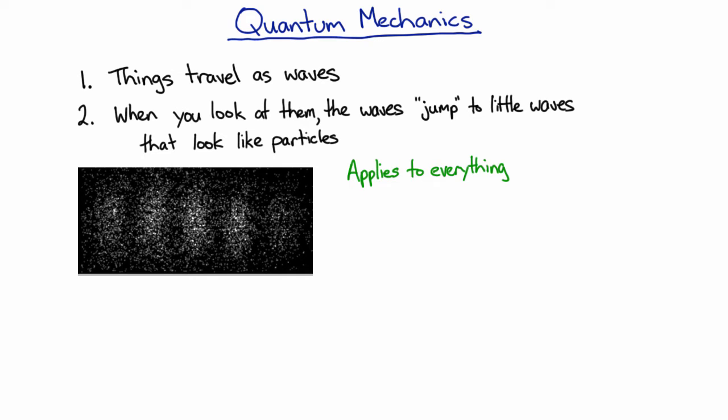So if quantum mechanics really applies to everything, big and small, then the real question shouldn't be, well, in that case, why is the theory so weird? The real question should be, so why are things so simple? Why haven't I seen this strange behavior before?